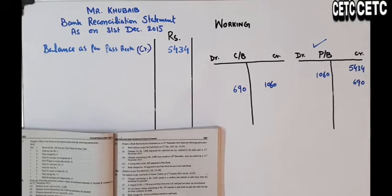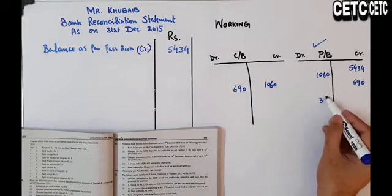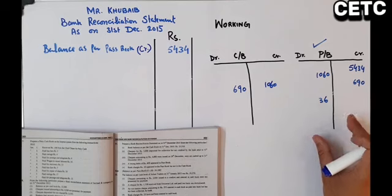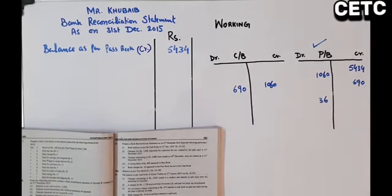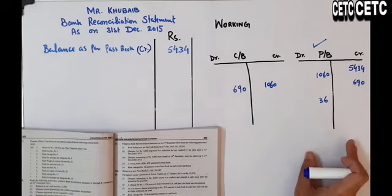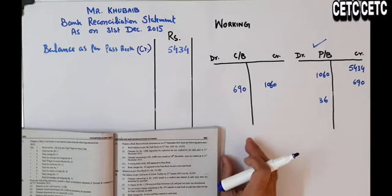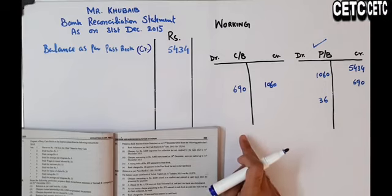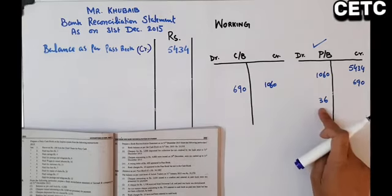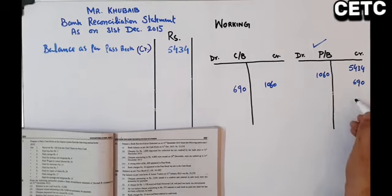Next: interest charged by bank — bank نے interest charge کیا تو اس نے customer کا خاتہ debit کر دیا: 36 rupees۔ اب ادھر نہیں ہوئے — ہم Passbook پہ کھڑے ہیں، اس book کو تو ہم change نہیں کر سکتے۔ Passbook میں دو کام ہوئے ہوتے ہیں: debited by bank اور credited by bank۔ جب debit کیا ہے تو ہم اس کو reverse کر لیں گے اور credit کر لیں گے۔